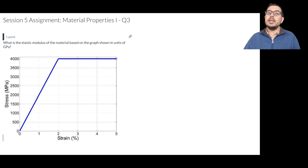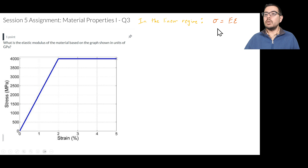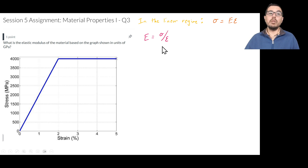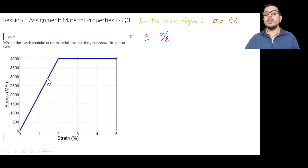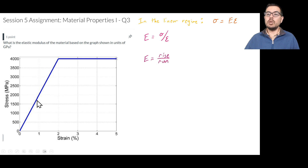In the linear regime, we can calculate the elastic modulus using Hooke's law: sigma equals E times epsilon, so E equals sigma over epsilon. From a practical perspective, sigma over epsilon means we're interested in calculating the slope of this line.